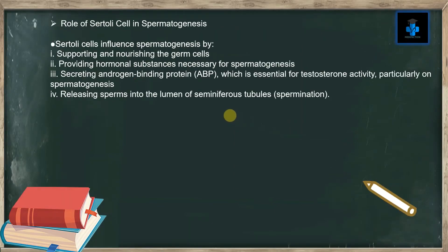The role of Sertoli cells in spermatogenesis: number one, supporting and nourishing the germ cells; number two, providing hormonal substances necessary for spermatogenesis; number three, secreting androgen binding protein which is essential for testosterone activity particularly on spermatogenesis; number four, releasing sperms into the lumen of seminiferous tubules.